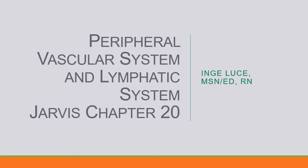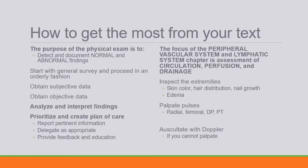Jarvis Chapter 20 focuses on the Peripheral Vascular System and the Lymphatic Drainage System. When reviewing the material, remember that you should know normal and abnormal findings. Try to be very organized in your approach. The focus of this chapter is circulation, perfusion, and drainage.